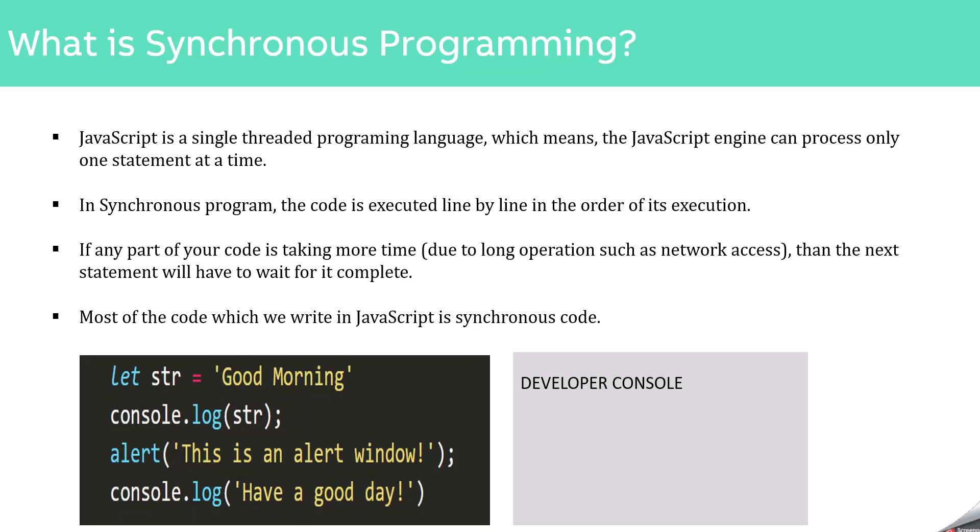Here we have another simple JavaScript program. When we run this program, in the first statement we are creating a variable and assigning it the value 'Good Morning'. So the variable will be created and assigned with this value, and then we move to the next statement. In the next statement, we are logging the value of this variable str in the developer console. So this console.log statement will be executed and then once its execution is complete, we move to the next statement.